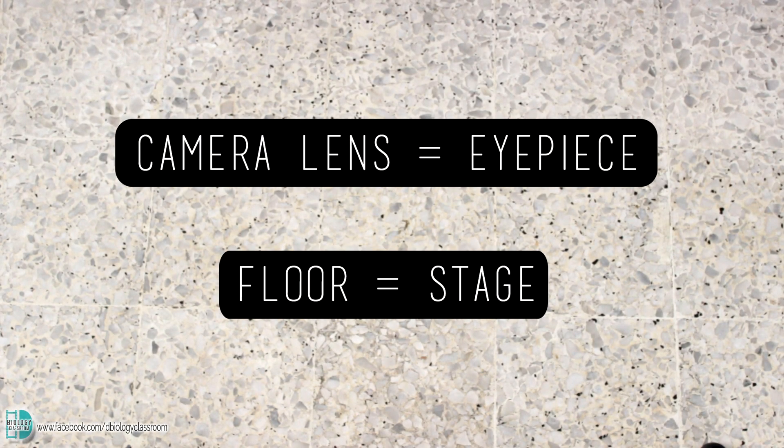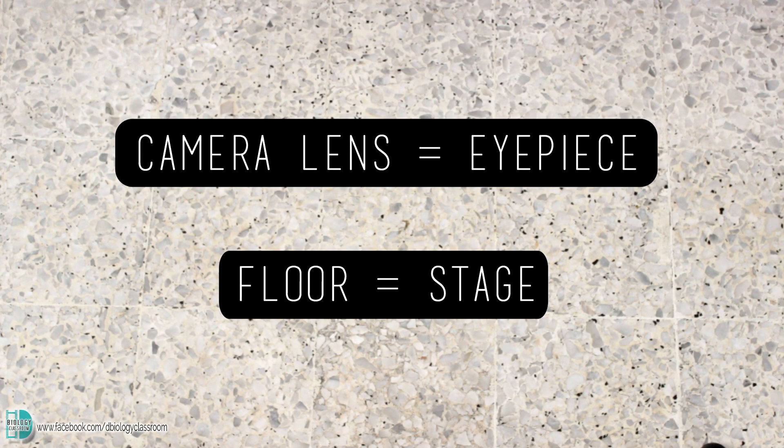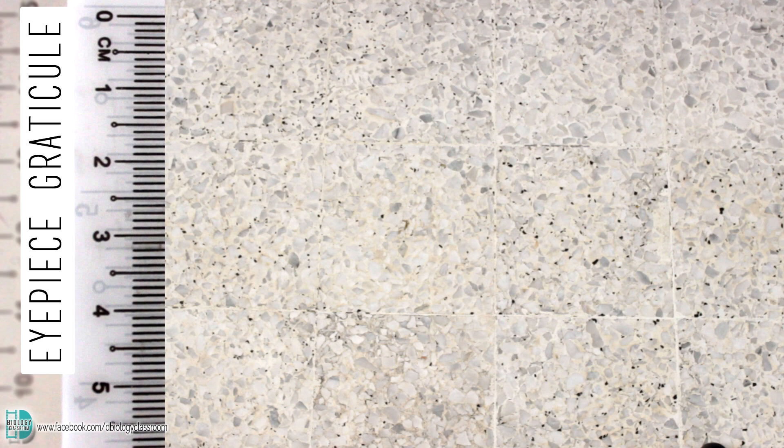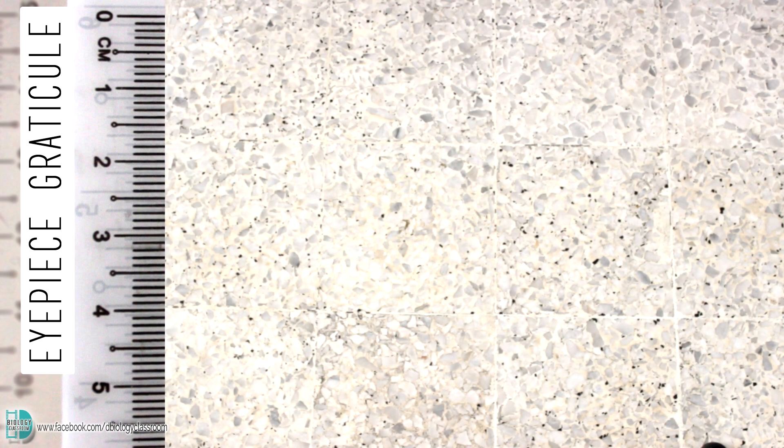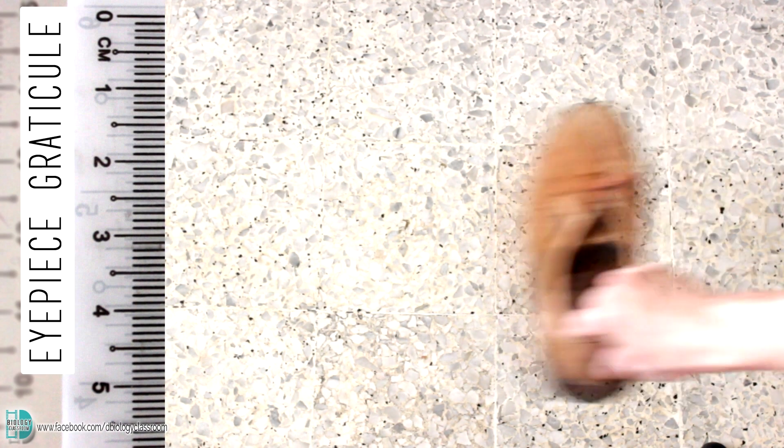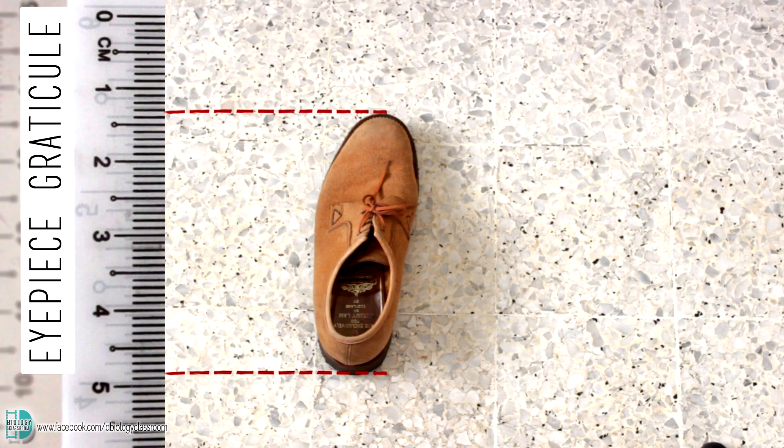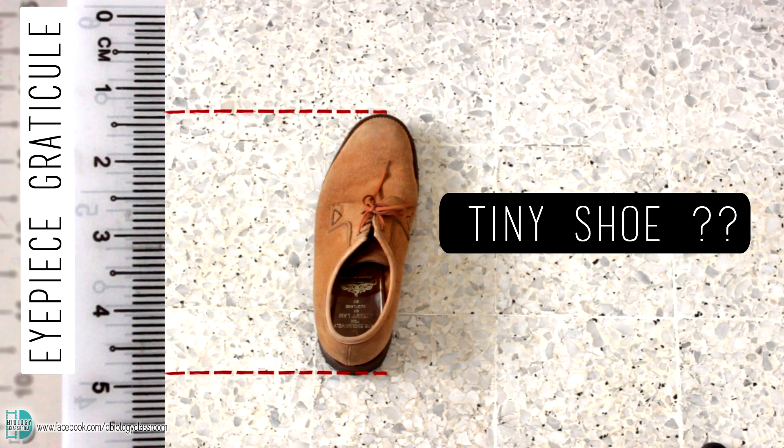Imagine my camera lens is the eyepiece of a microscope. The floor is the stage. If I fit a ruler at the lens, can I use it to measure what I place on the stage? Now, let me put one of my shoes on the stage. The ruler is showing me that my shoe is less than 5cm. Does that make sense to you? Is my shoe really that small? Of course not.